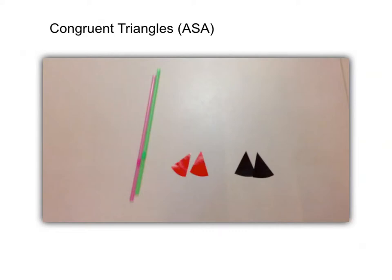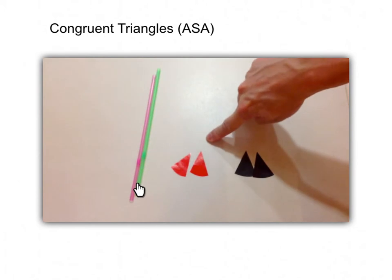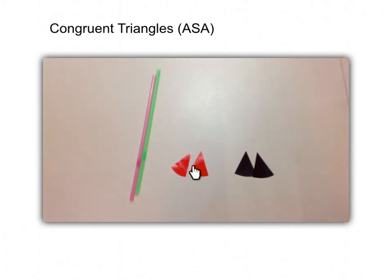And now let's just look at another condition for two triangles to be congruent, which is ASA. And suppose we have a pair of drinking straws which have the same length. So this will be the pair of drinking straws and we have two pairs of equal angles.